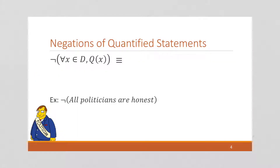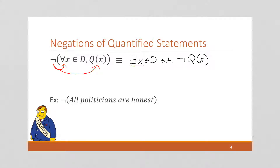The negation of a universal statement turns it into an existential statement. The negation of 'for all x' is going to be 'there exists an x in the domain such that our quantifier is false.' You can think about this as pulling that negative inside — the negative flips the for-all into a there-exists, and then flips the quantifier to its negation. This is the official negation. Let's do an example.